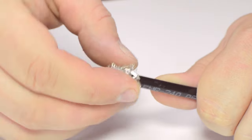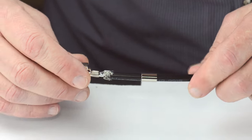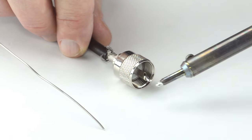Pull back the braided shield and insert the connector housing onto the cable. Solder the center conductor to the solder cup to make termination.